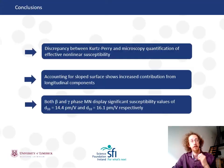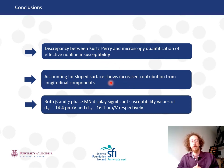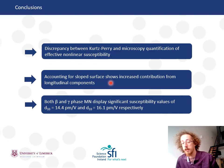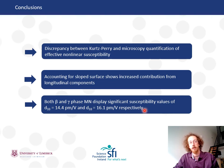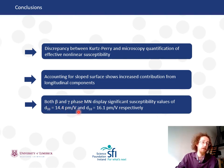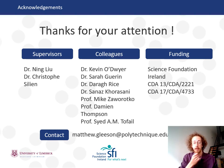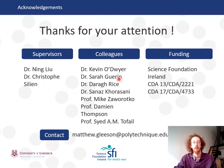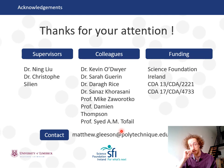Just to wrap up with conclusions: we show a small discrepancy between Kurtz-Berry and microscopy-based quantification of the effective nonlinear susceptibility. We show that accounting for morphology via Fresnel correction and birefringence correction shows an increased contribution from the longitudinal tensor components and the efficiency of the process. Finally, in terms of effective nonlinear susceptibility without resolving into individual components, both phases show very high values: 14.4 pm/V for beta and 16.1 pm/V for gamma. Thanks to the organisers for putting this conference together, and to yourselves for your attention. This was part of my PhD thesis — thanks to my supervisors, colleagues, and funding. I'm currently a postdoc at the Institut Polytechnique de Paris, just outside Paris, so if you'd like further information on second harmonic generation or are thinking about doing these experiments yourself, I'm happy to help.